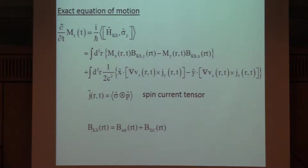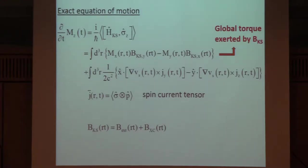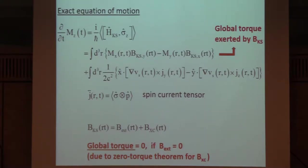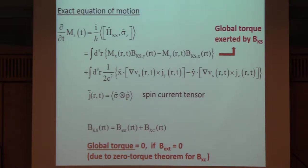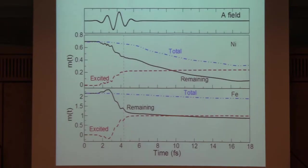One can see this mathematically directly from the equation of motion—an exact equation of motion following from the time-dependent Kohn-Sham equations. You get a spin torque term: the global torque exerted by the effective magnetic field. If there is no external field, this is the exchange-correlation field, and this term, integrated over the whole system, is zero—exchange forces cannot exert a global torque. The term involving 1/c² comes from spin-orbit coupling, so if we neglect it, the right-hand side is zero and there is no spin dynamics. Spin-orbit coupling drives the magnetization.